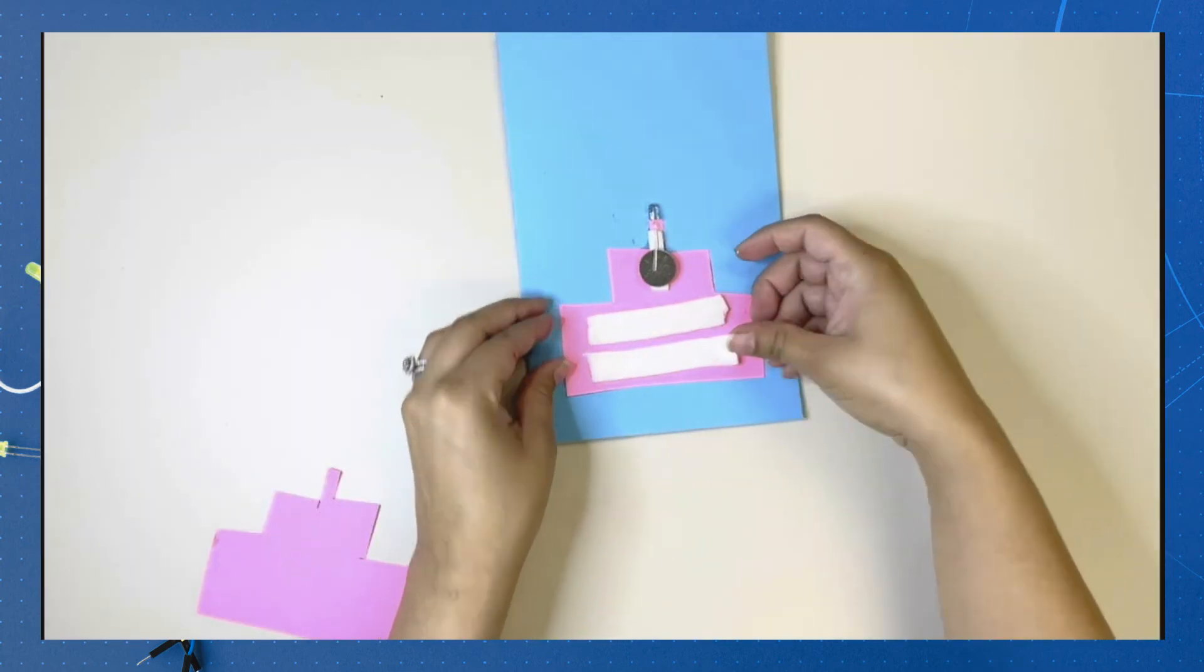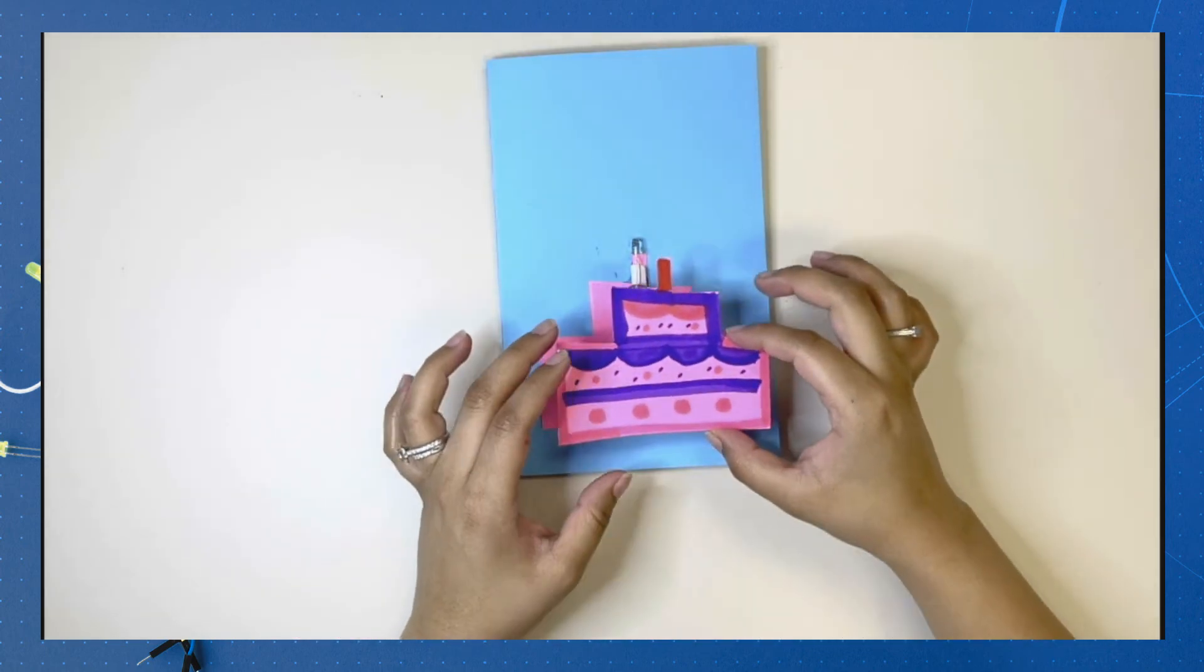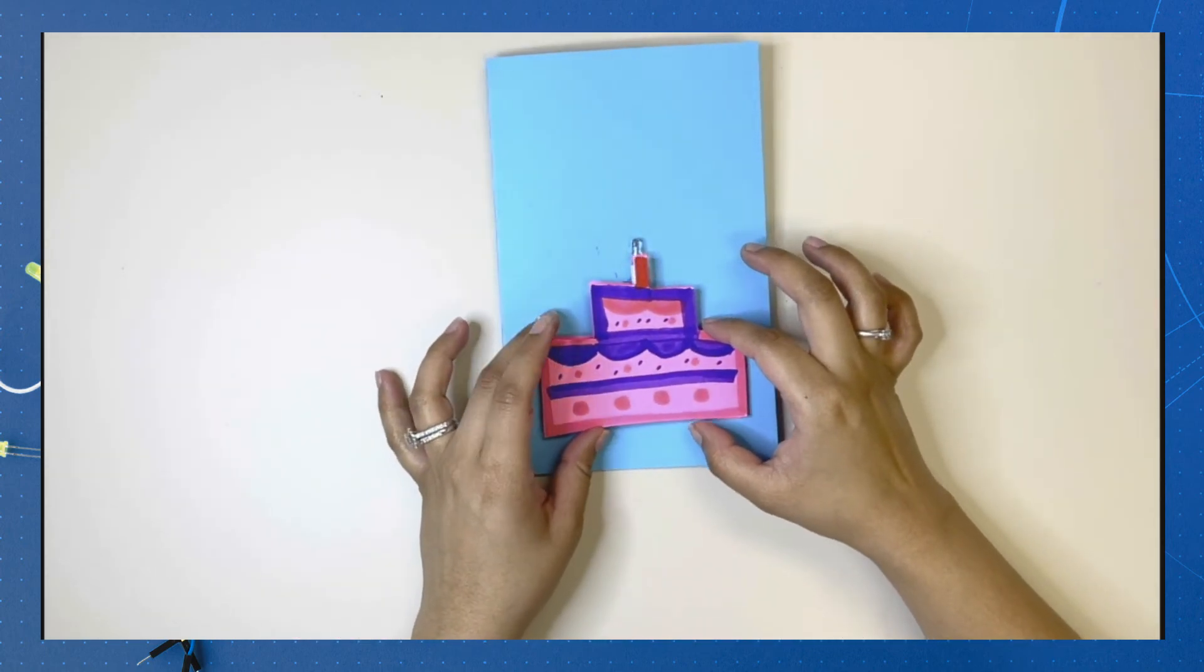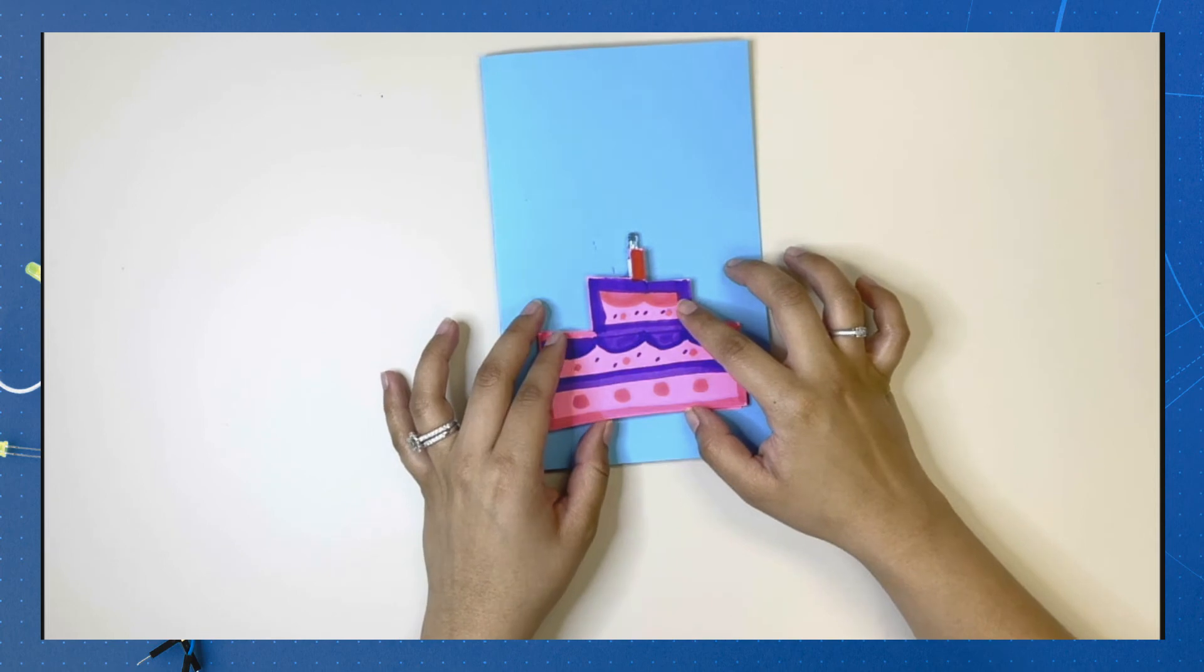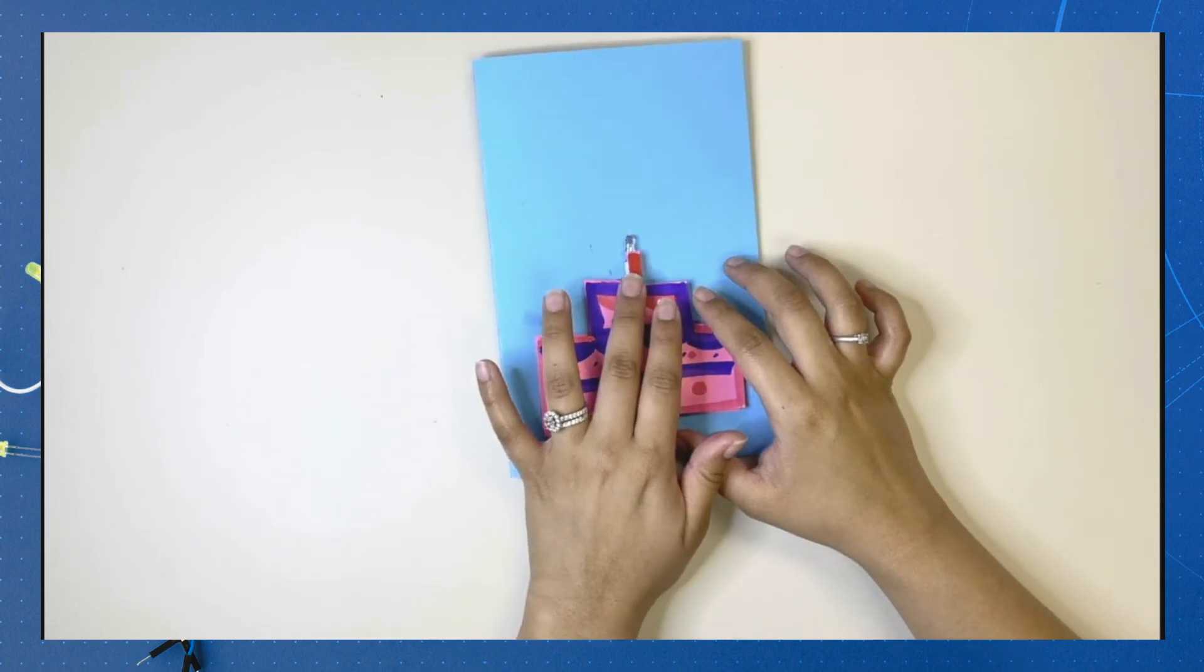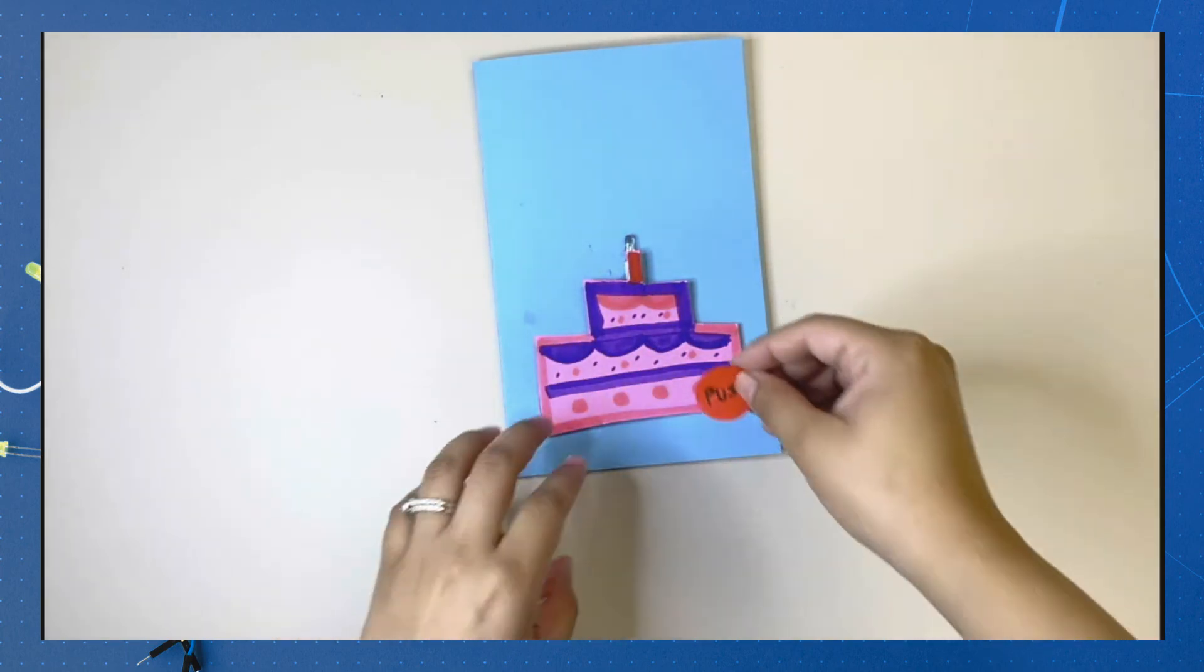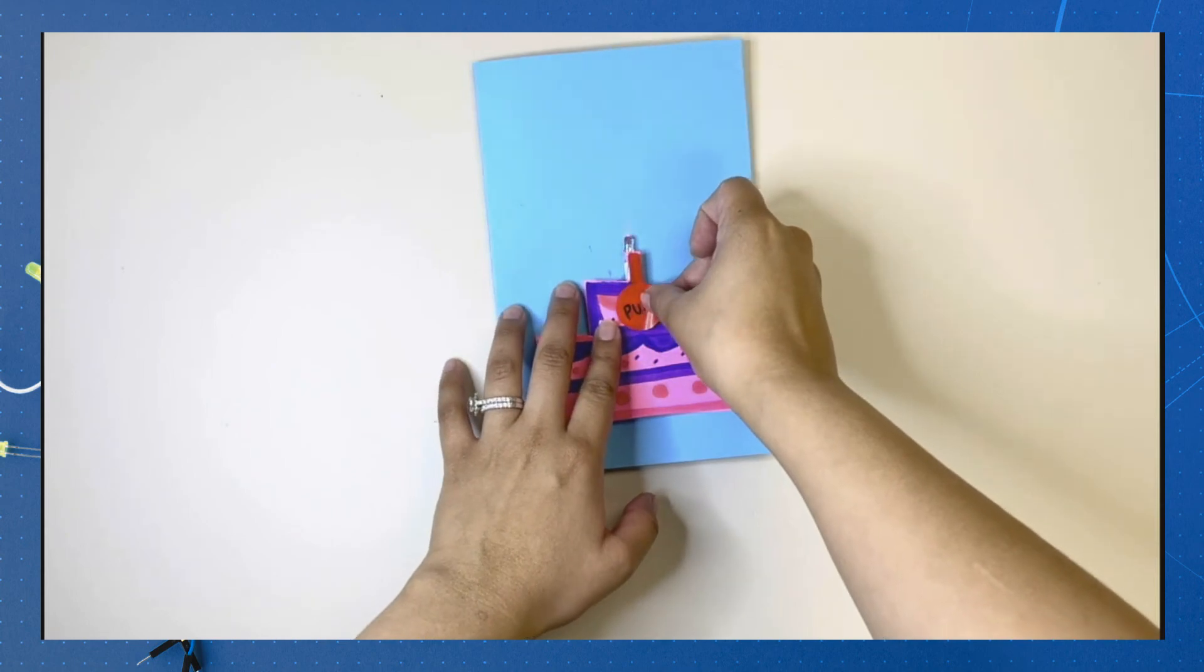Let's continue our activity. Using two long strips of double sided foam tape, we will attach the face of our cake. This is where you can choose to add the press here or push button to indicate where your switch is.